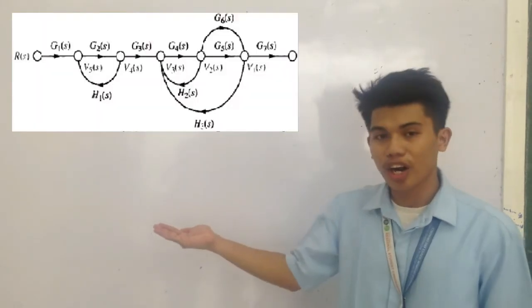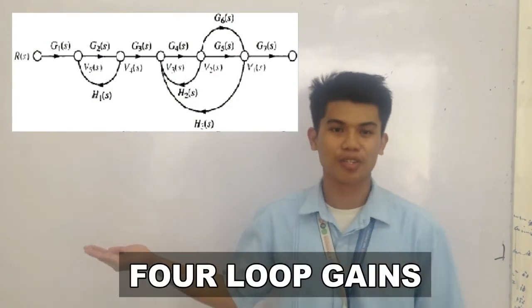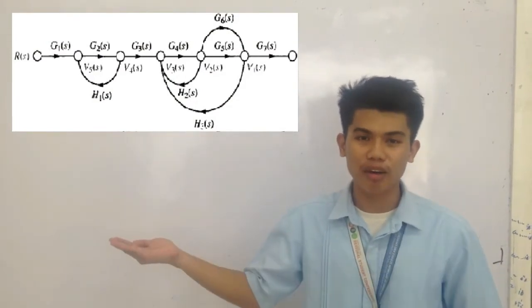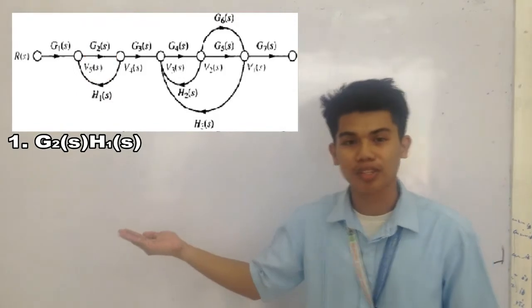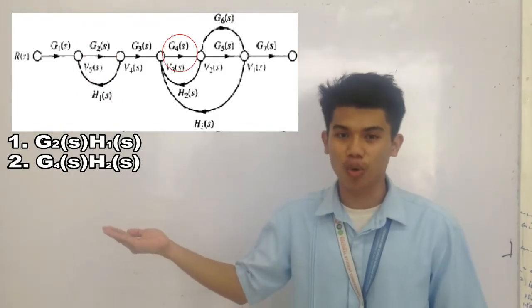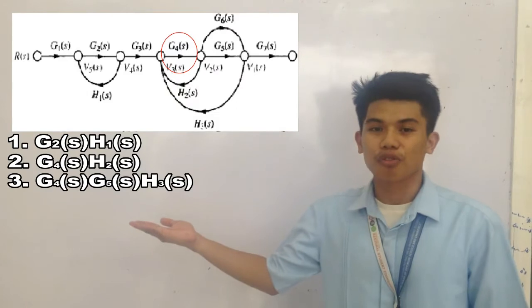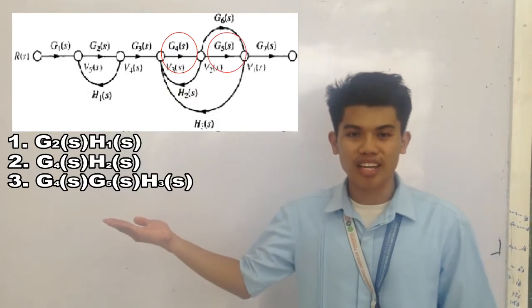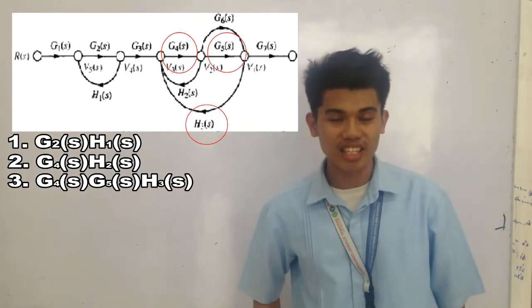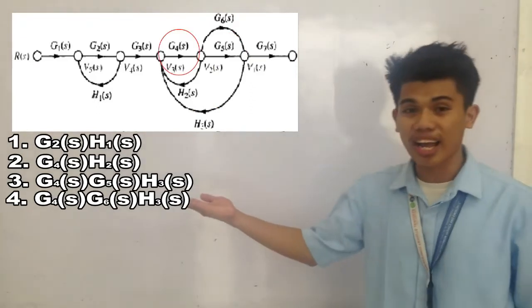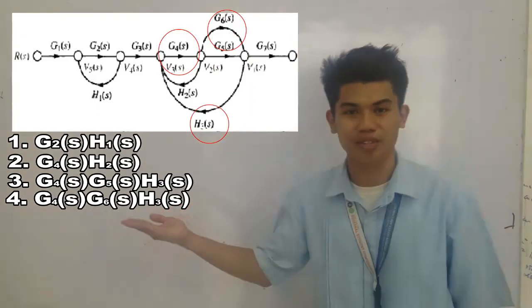Here in the figure, we have four loop gains. We have G2(s)H1(s), G4(s)H2(s), G4(s)G5(s)H3(s), and lastly G4(s)G6(s)H3(s).